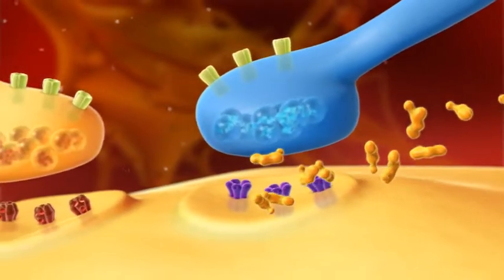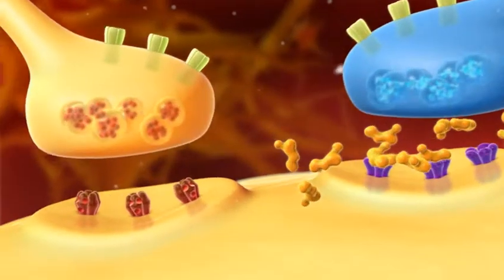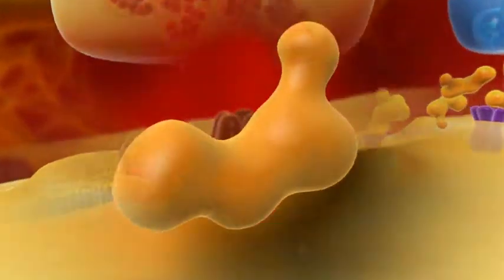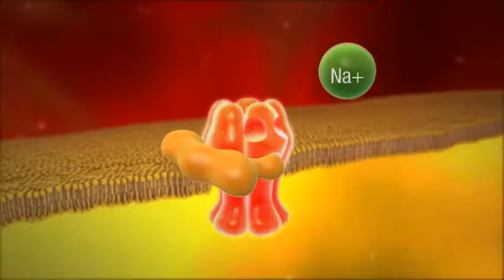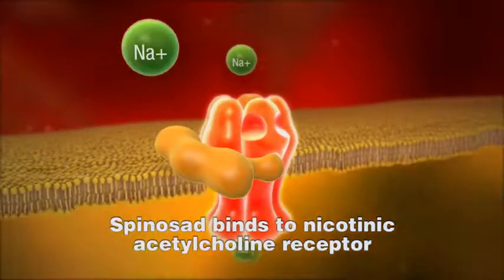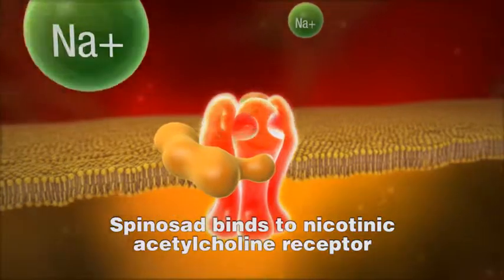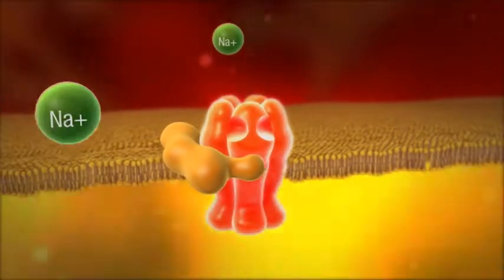Spinosad has a different, unique and highly selective mode of action. It also binds to the nicotinic acetylcholine receptor but at a binding site that is completely different from those used by all pesticides known so far.